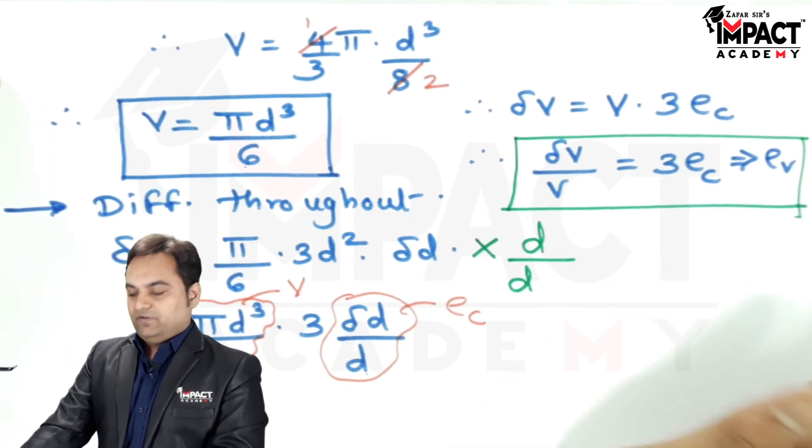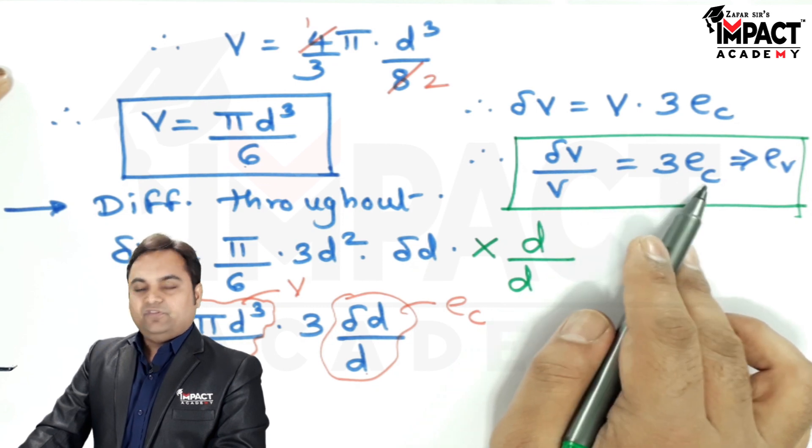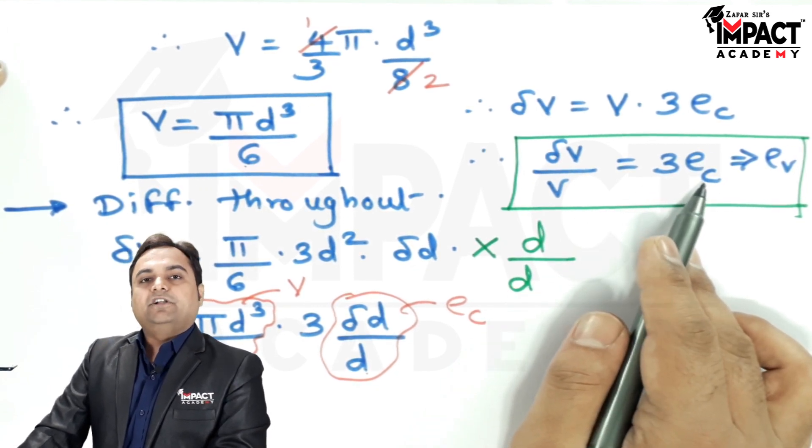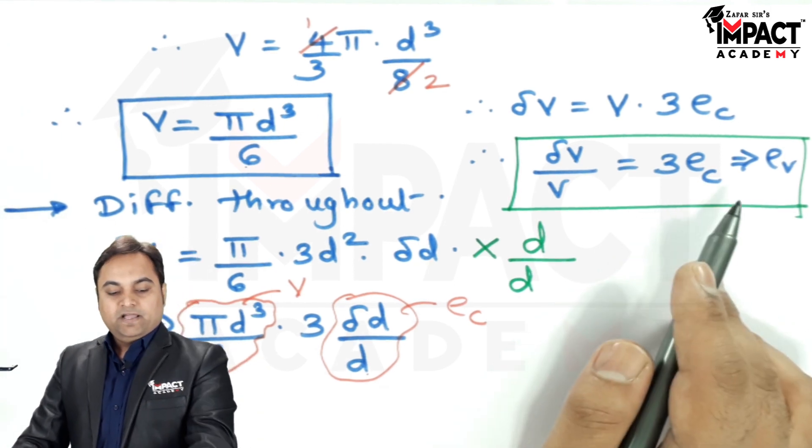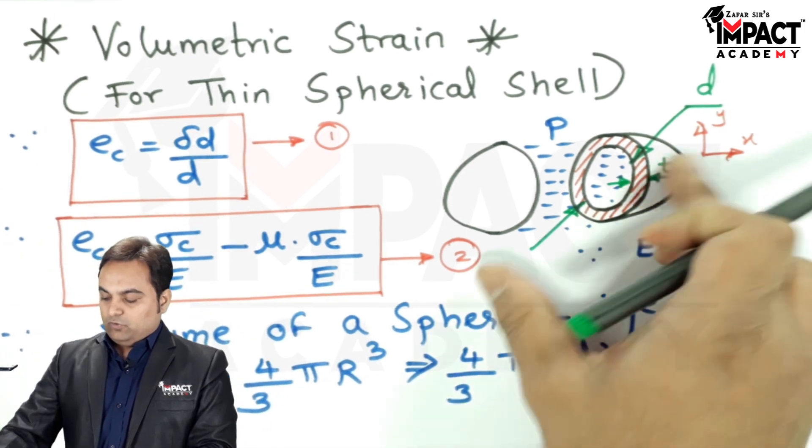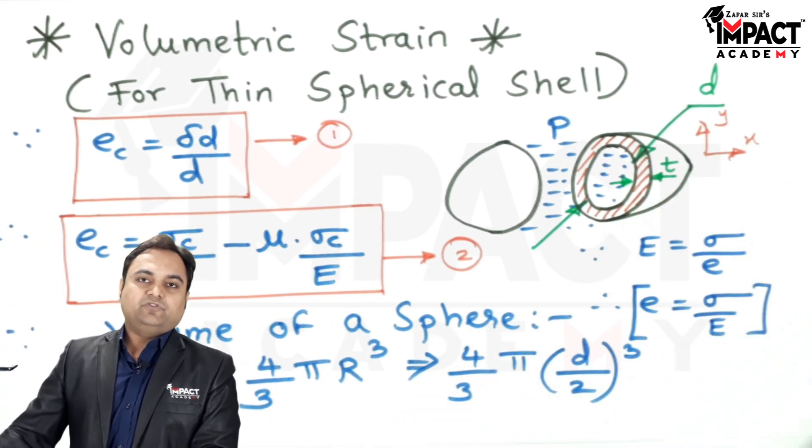So, in other words, we can say that the volumetric strain for a thin spherical shell is 3 times the circumferential strain. And that circumferential strain is change in diameter upon original diameter. And it can also be given by this formula, considering that when over one of the axis, the diameter increases on the other axis, it has to reduce.